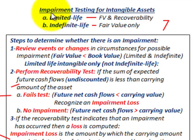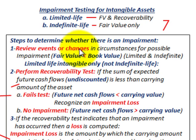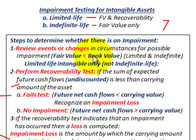These are the rules for impairment testing of intangible assets — the steps we'd follow to determine whether there is an impairment. Number one: review events and changes. We're going to look at whether fair value is less than book value. If it is, we're going to have an impairment. We're looking at a limited-life intangible, so there are two tests we have to perform.